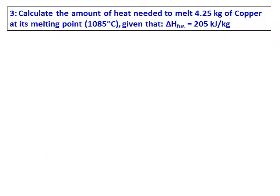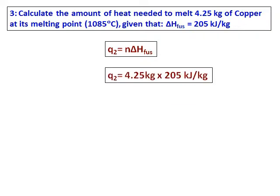Last question — a simple one. Calculate the amount of heat needed to melt 4.25 kilograms of copper at its melting point, given that delta H fusion = 205 kilojoules per kilogram. Q = mass times delta H fusion. Since delta H fusion is given per kilogram, just multiply 4.25 kg by 205 kJ/kg; the kilograms cancel and the value of heat is 871 kilojoules.